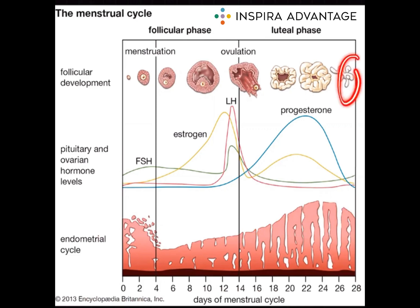However, if a pregnancy doesn't implant by day 28, all of the lining that has been built up is going to be gotten rid of through menstruation. The menstrual cycle begins on the first day of menstruation, right at day zero, also known as the menstrual period, which is when the uterine lining is being shed. Menstruation typically lasts anywhere from three to seven days and is characterized by the shedding of the uterine lining, which is called the endometrium.